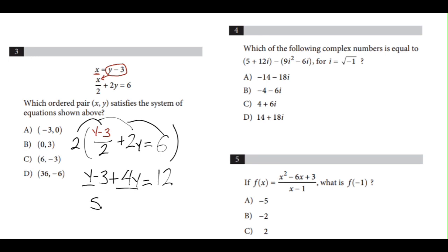y plus 4y is 5y minus 3 equals 12. We can add 3 to both sides, and we'll get 5y equals 15. And the last step will be to divide each side by 5, and we'll get y equals 3.